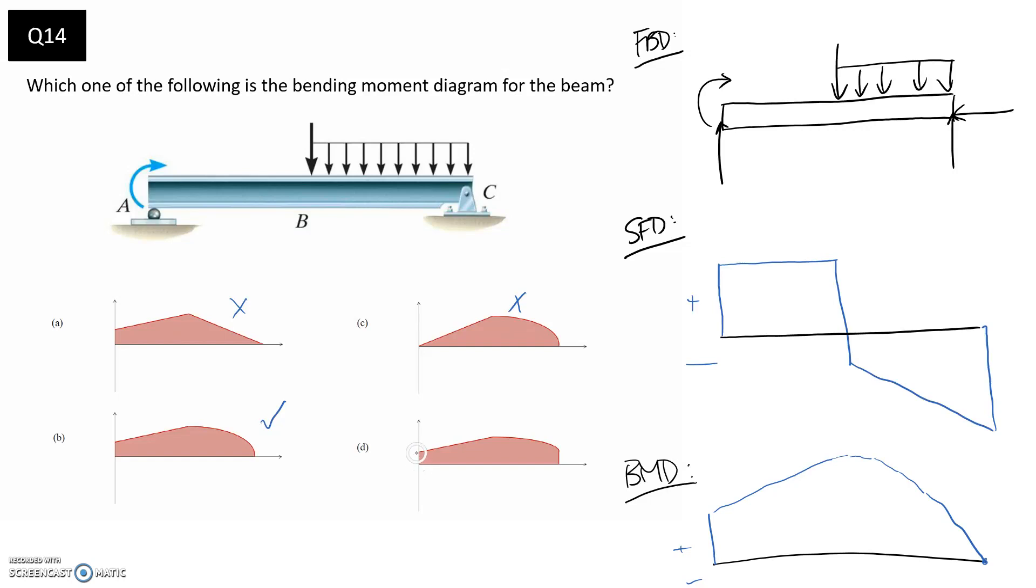For this last one we've got the step up bit which is what we wanted. We've got the straight gradient here which is what we wanted. We've got a gradient that's changing here and it's getting increasingly steep. However, it's got this step down at the end and if that was to happen we need an applied couple on the end here as well which we don't have. So that one is wrong as well.